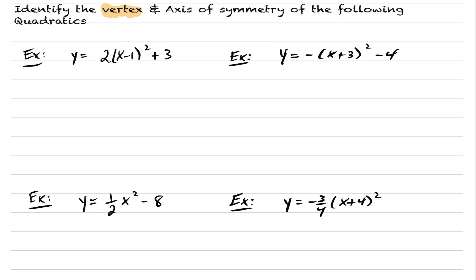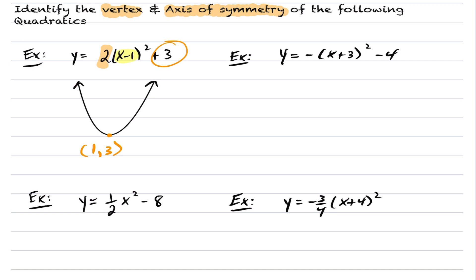Let's apply what we've learned and identify the vertex and axis of symmetry. For the first example, the leading coefficient is 2 — positive — so it opens upwards. We need to find what value of x makes the inside zero: that's x equals 1. If x is 1, the y value is 3. So the vertex is (1, 3). For the next example, the leading coefficient is negative, so the quadratic opens downwards and we want the maximum point. The inside is zero when x equals negative 3, and the corresponding y value is negative 4. So the vertex is (negative 3, negative 4).